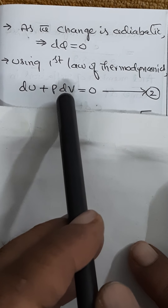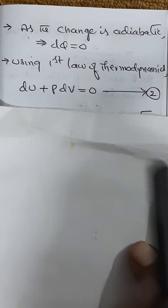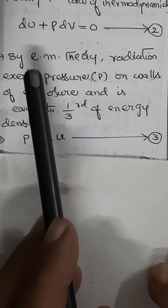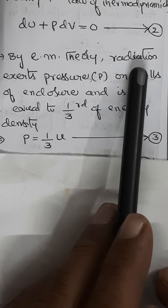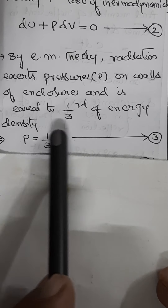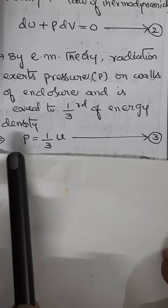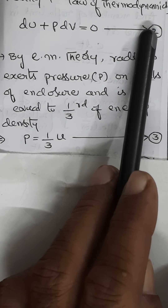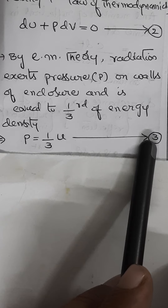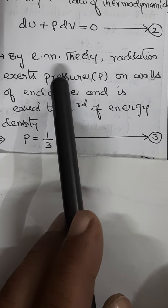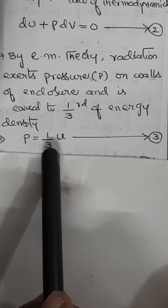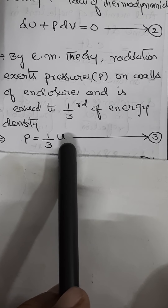By electromagnetic theory, radiation exerts a pressure on the walls of the enclosure equal to one-third of the energy density. If the pressure is P and energy density is u, then electromagnetic theory gives P = u/3. Let this be equation 3.